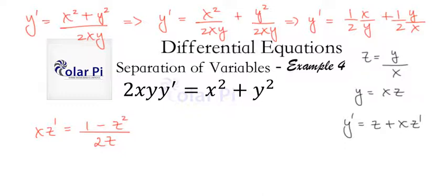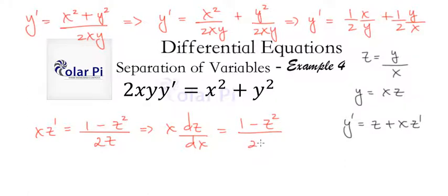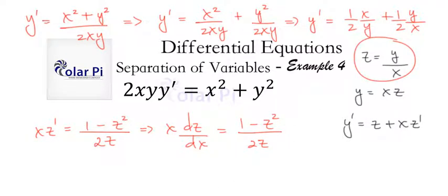So we have x times dz/dx equals (1 minus z²) over 2z. We can proceed to solve: first for z, and then in turn for y. Note that z is a function of x since y is a function of x.